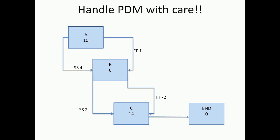Now, one thing which we have to do is to be able to understand why we have to handle PDM with care. Let me take this example, we have seen some examples like this before. Basically I have three activities A, B, C and I have an end, and I have defined different relationships.